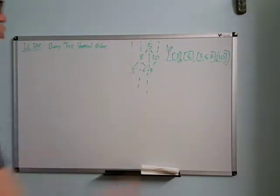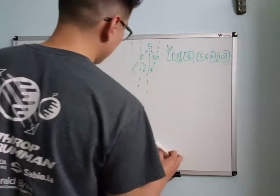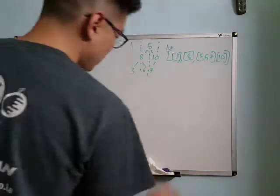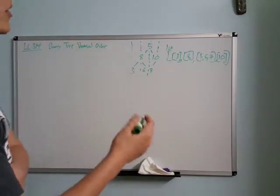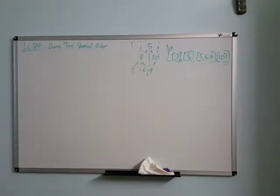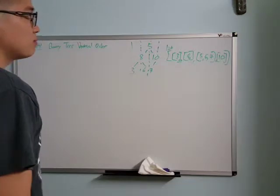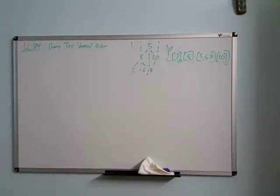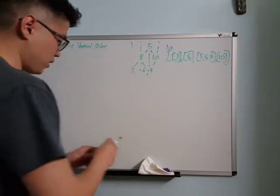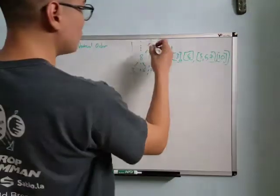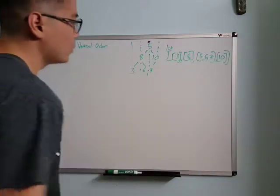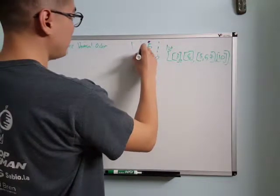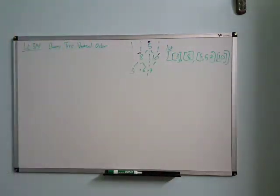That's the gist of the problem. This is pretty similar to the right-side order and getting all the nodes at the same depth. The idea is, starting from the root, you can pretend there's a column, and you'd start with zero — zero makes the most sense. So the root is zero, and when we go left we subtract one (decrement one), and when we go right we increment one. So at ten we'd be at plus one.